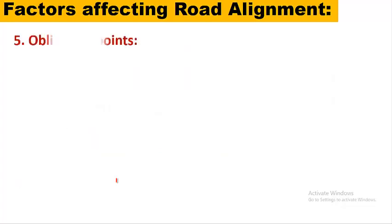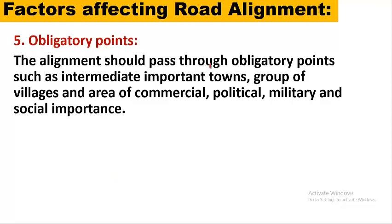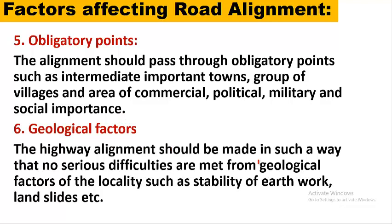The fifth factor is obligatory points — the alignment should pass through important intermediate towns, villages, and areas of commercial, political, military, and social importance. The sixth factor is geological factors: the highway alignment should avoid serious difficulties from geological conditions of the locality, such as instability of earthwork, landslides, and similar hazards. That's all for today — please subscribe to the channel and press the bell icon to get more videos.